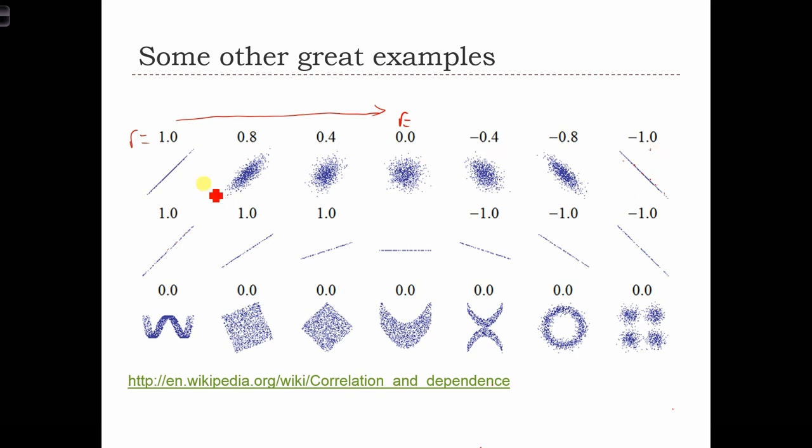So here we see R changes not based on the slope of the line, but rather changes based only on the dispersion of the point cloud around the line.